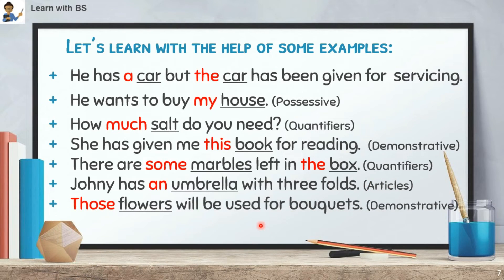Example 7: 'Those flowers will be used for bouquets.' Here, 'flowers' is the noun. The word that comes before the noun is 'those'. So 'those' is a determiner. What type? It is a Demonstrative determiner, because it is pointing out — 'those flowers'.